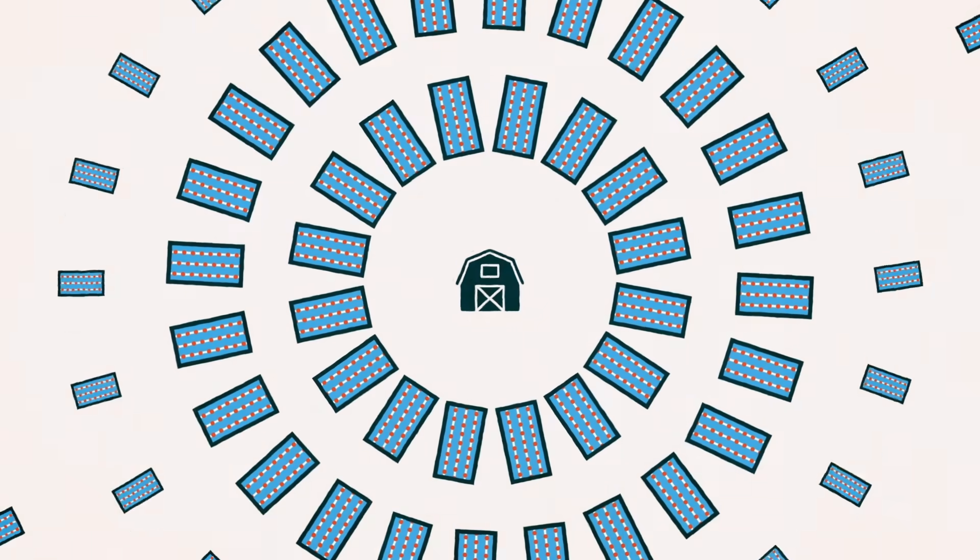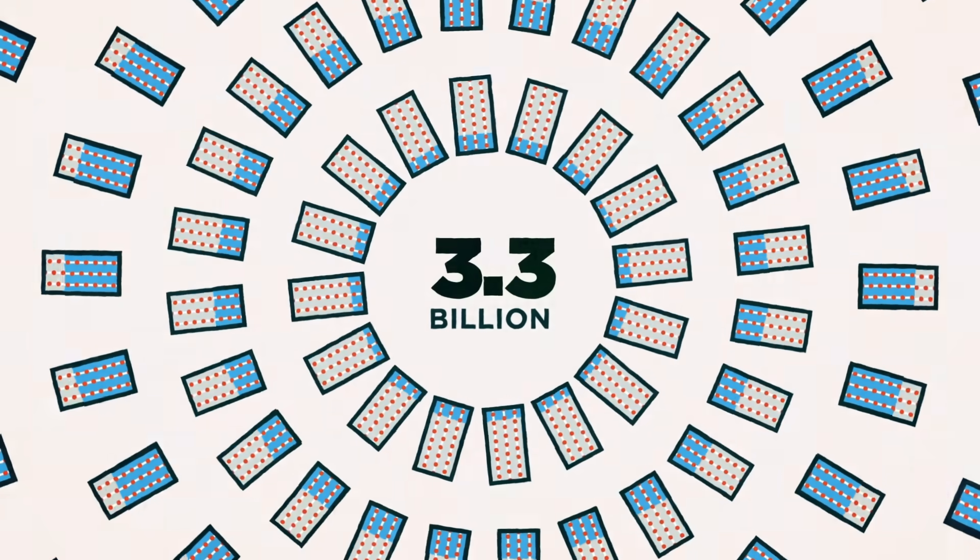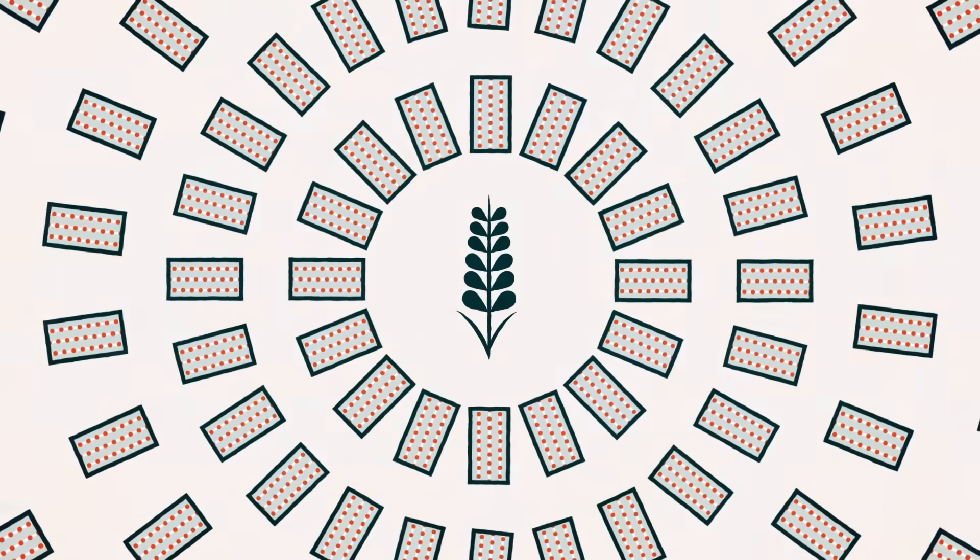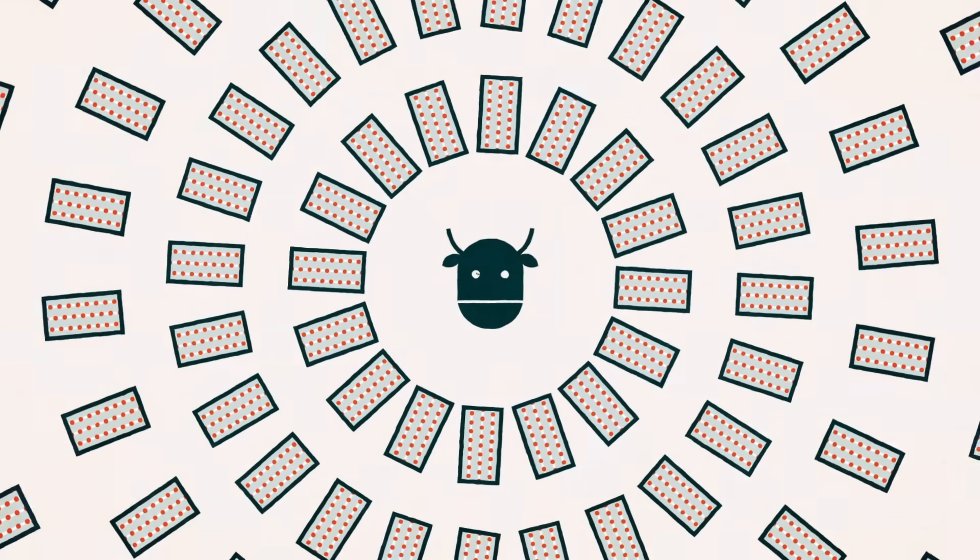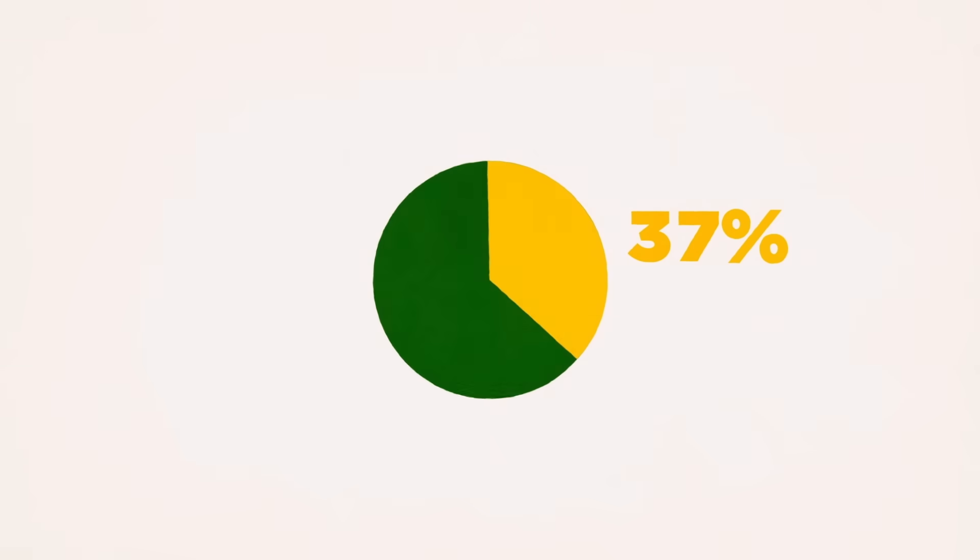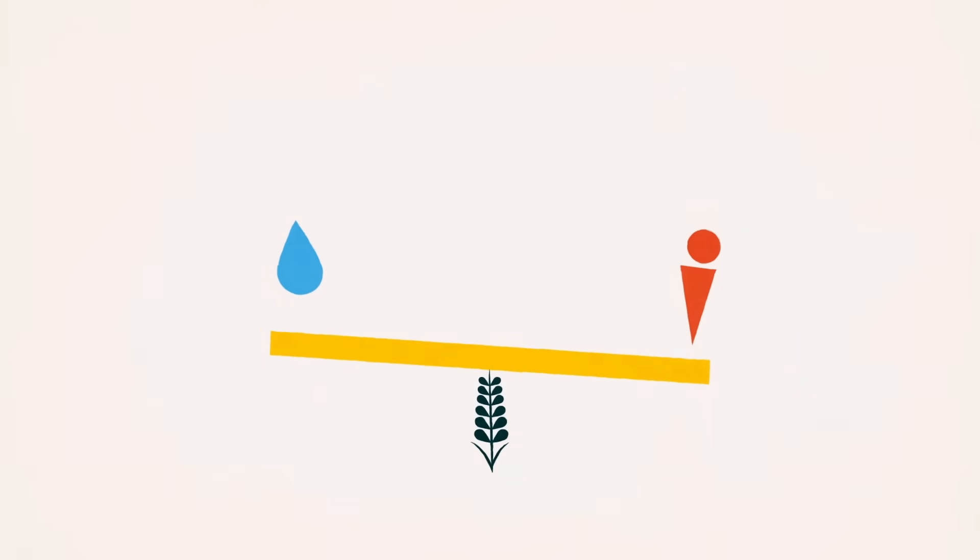Our farms drain the equivalent of 3.3 billion Olympic-sized swimming pools every year. All of it swallowed up by crops and livestock to feed Earth's growing population. Agriculture currently covers 37% of Earth's land area, posing the biggest threat to our regional water supplies.